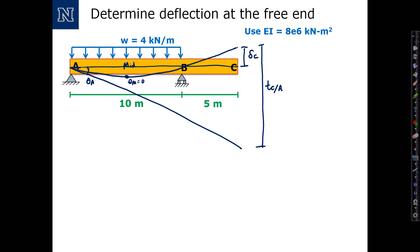So basically theta A will be equal in magnitude to the area between support A and the midpoint of the beam. Finally, to evaluate delta C, I need to subtract T at C with respect to A.